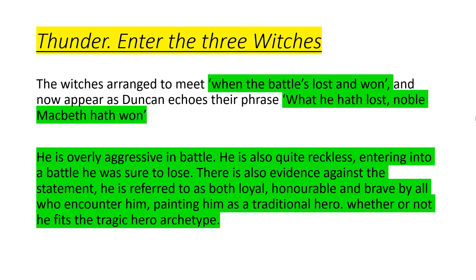Let's get into the actual scene. We are introduced to thunder, lightning, and rain. Enter three witches. The witches arranged to meet 'when the battle's lost and won.' This is symbolic — at the end of Act 1, Scene 2, King Duncan says 'while he has lost, noble Macbeth had won.' As a result, everything has fallen into place, like a jigsaw puzzle.